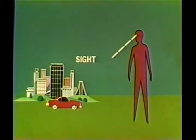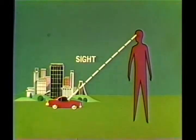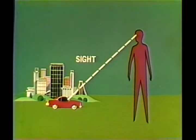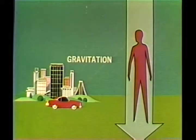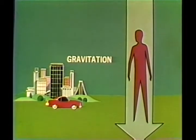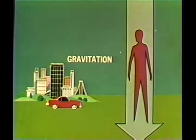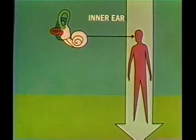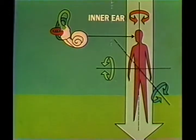Trouble really begins when there are no visual references. When we're on the ground, the combined input from several senses tells us which way is up. Sight gives us a frame of reference; we can see where we are in relation to fixed objects. Feeling gravity's pull on our muscles and joints tells us which way is down, and special parts of our inner ear help give us our sense of balance and orientation.